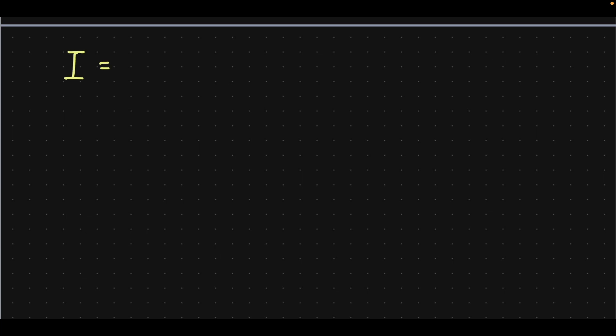To start this discussion let me write down the integral. It's the integral from 1 to infinity of the natural log of x squared plus 1, divided by x to the 6th, dx. Now your natural instinct would probably tell you that we have to use the Taylor series for the natural log function, because we have natural log of 1 plus some function which is the right form for the Taylor series expansion.